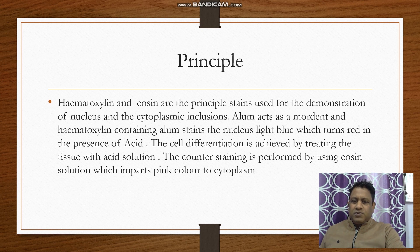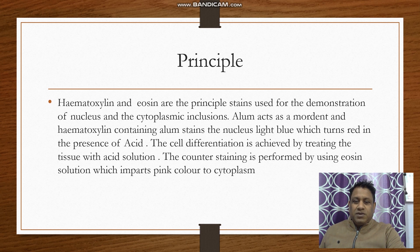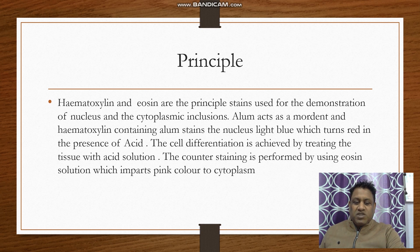To elaborate further: H&E are the principal stains used for the demonstration of the nucleus and cytoplasmic inclusions. Alum acts as a mordant, and hematoxylin containing alum stains the nucleus light blue, which turns red in the presence of acid. Cell differentiation is achieved by treating the tissue with acid solution. Counter staining is performed using eosin acid solution, which imparts a pink color to the cytoplasm.